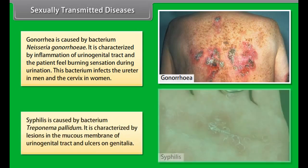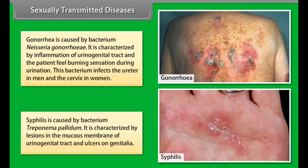Syphilis is caused by the bacterium Treponema. It is characterized by lesions in the mucous membrane of the urinogenital tract and ulcers on the genitalia.